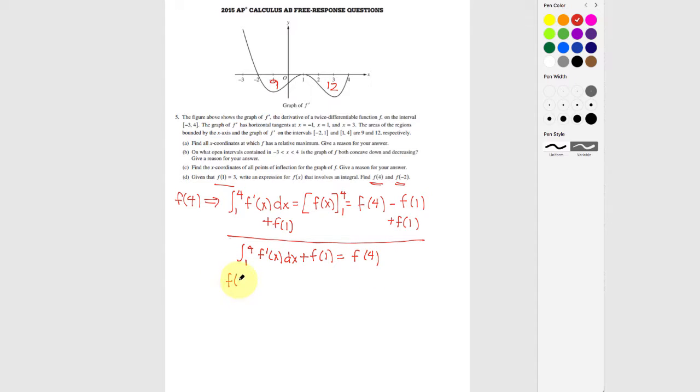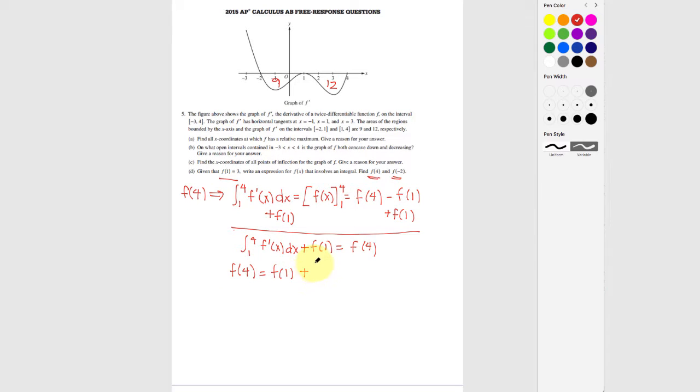In other words, f of 4 is f of 1, which was my starting point, plus whatever the area under that f prime curve is from 1 to 4. Because I have my starting point plus whatever area I'm accumulating under the curve, and that's going to bring me to where I am for f of 4.